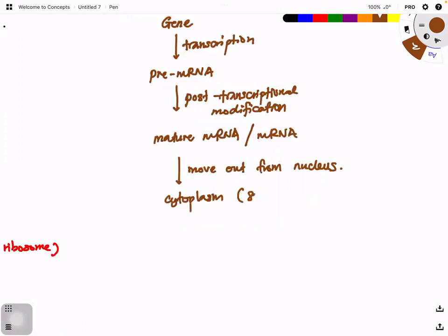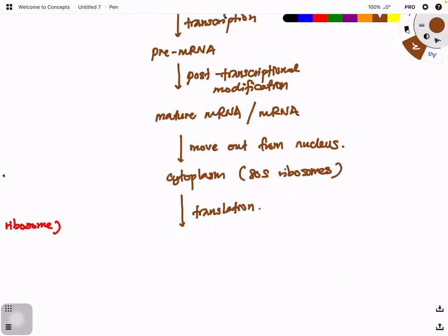At the ribosome, translation process only then takes place. When translation takes place, you get polypeptide.